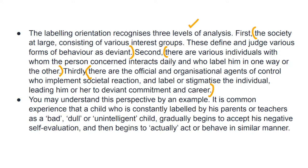An example is given here: if a child's parents constantly label them — saying 'you are bad, you are dull, you are unintelligent' — what will happen is that slowly the child will actually start to act that way. They will accept that they are unintelligent, believe it, and actually become unintelligent. This is the same thing we just studied in Labeling Theory — Howard Becker told us that if you label someone as deviant, they will become deviant.